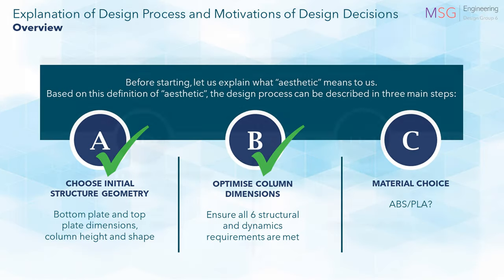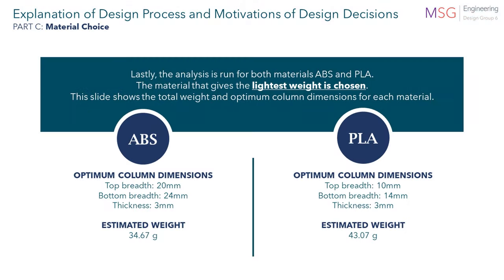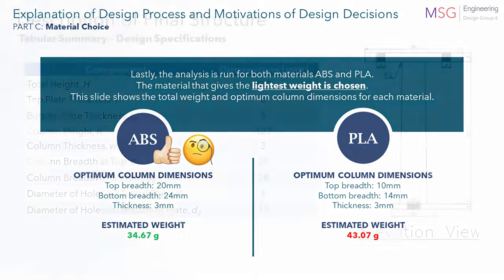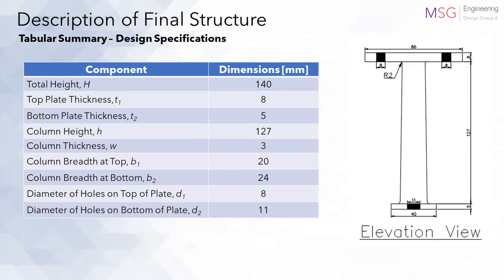Material choice. Two types of materials were made available. Both materials were used in the analysis and ABS was chosen over PLA due to achieving a higher strength-to-weight ratio. The final structure and its dimensions are illustrated here.